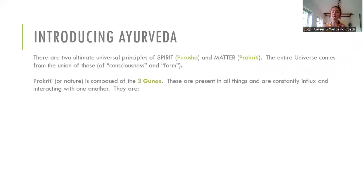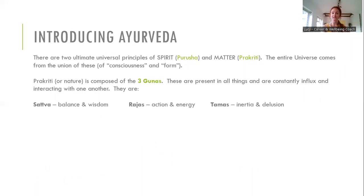When we talk about Ayurveda, there are two ultimate universal principles: spirit, which is Purusha, and matter, which is Prakriti. It's the union of these two that the entire universe comes from. The Prakriti part is composed of something called Gunas — there are three Gunas, and these are present in us and in everything surrounding us. These Gunas are called Sattva, Rajas, and Tamas. Sattva is about balance and wisdom, Rajas is action and energy, and Tamas is inertia and delusion.